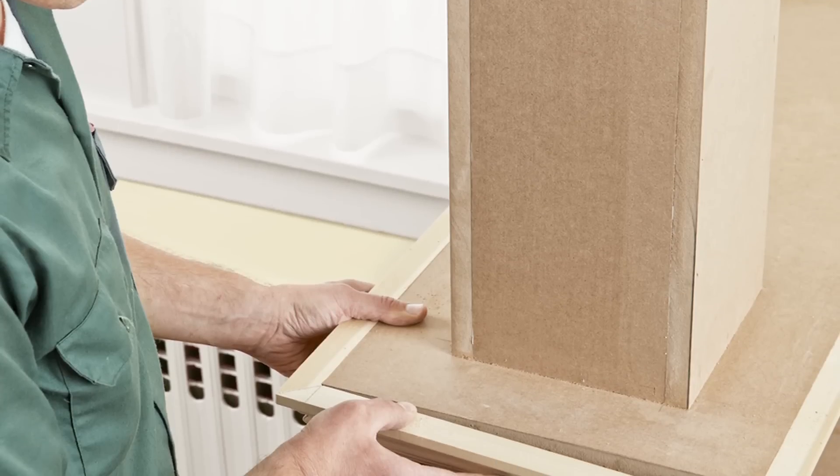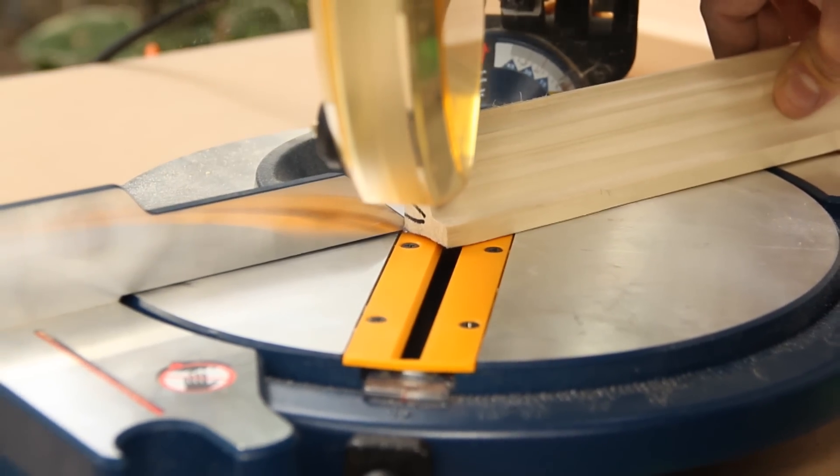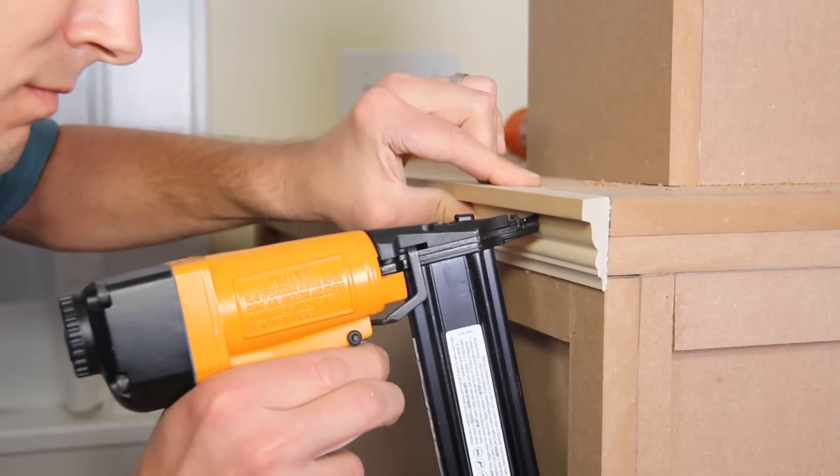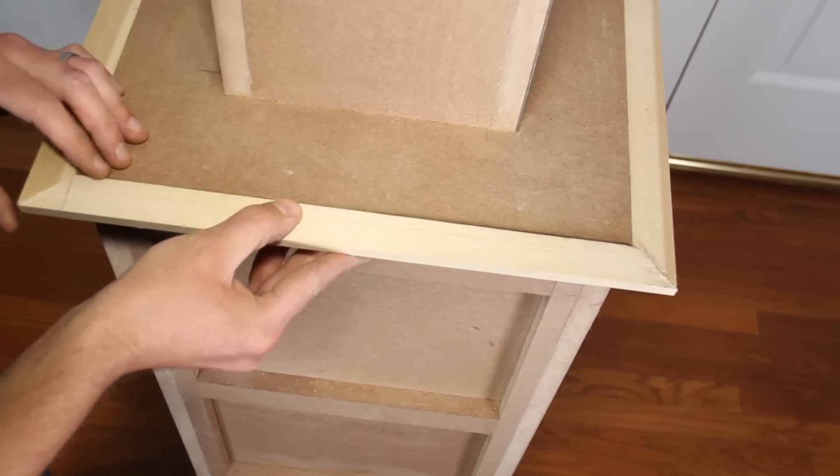Then comes the solid crown molding to trim the edge of the cabinet top. The easiest way is to start with the sides. Cut the wall end at 90 degrees and the other end at 45 degrees. Then glue and nail those two pieces in place. Then you just have to trim the end piece to fit between those two 45 degree angles.